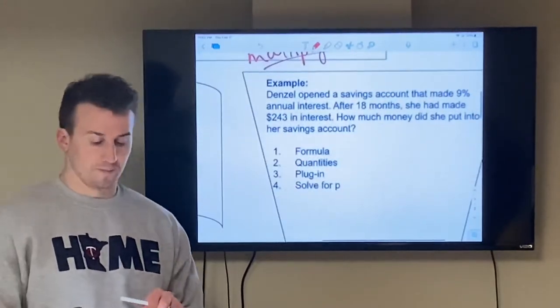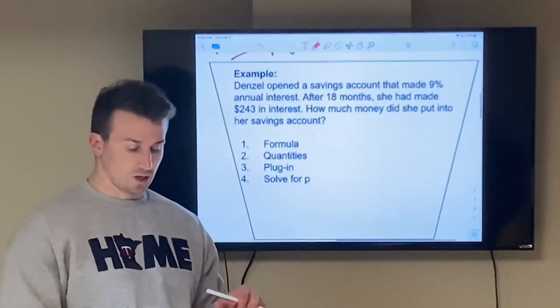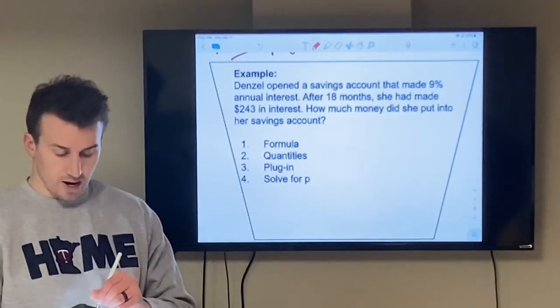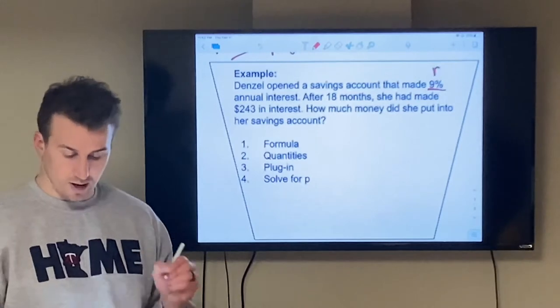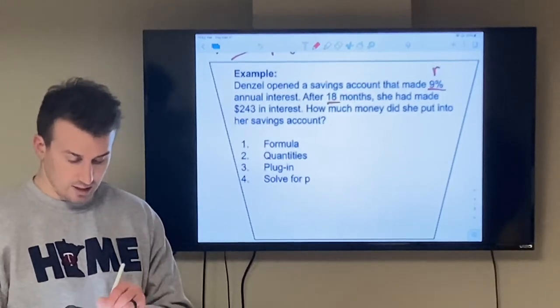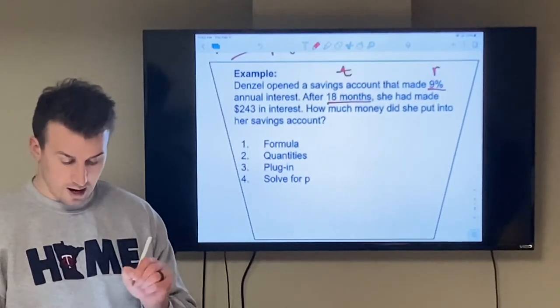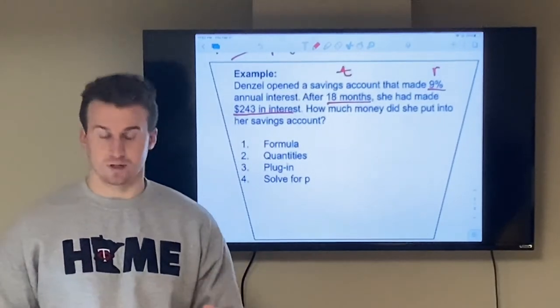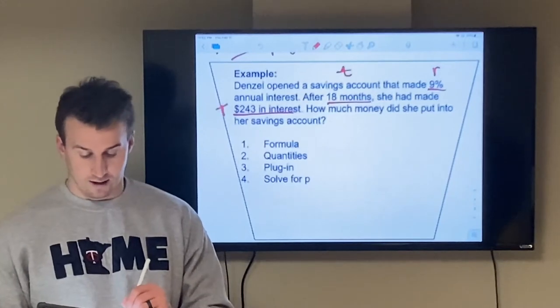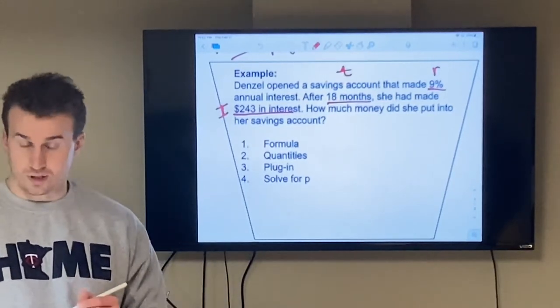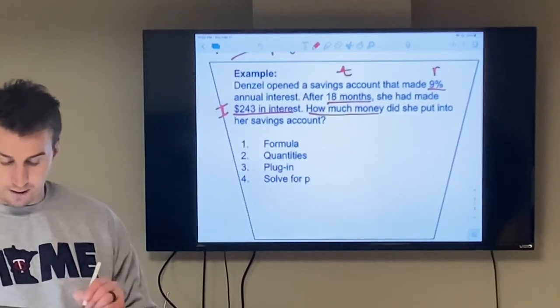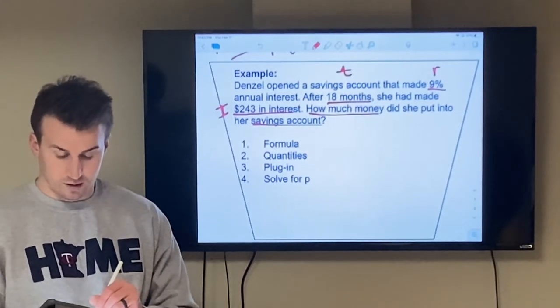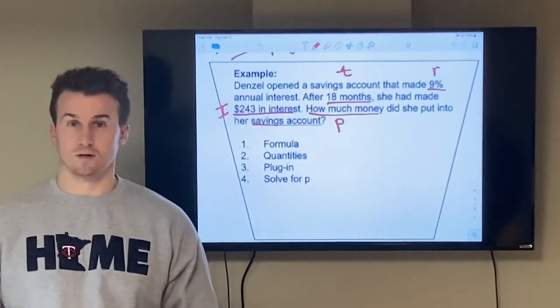So let's get into a word problem. This example says Denzel opened a savings account that made 9% annual interest. So this 9% is my rate R. After 18 months, that's my T time. She made $243 in interest, which represents the letter I. The question's asking, how much money did she put into her savings account? So I'm looking for the principal amount, P.